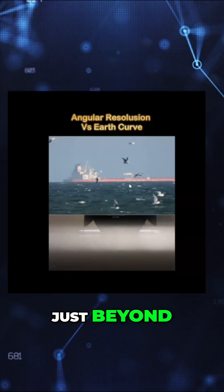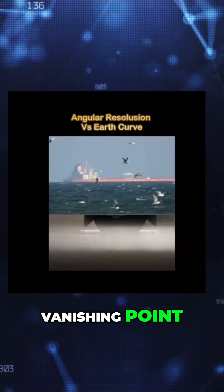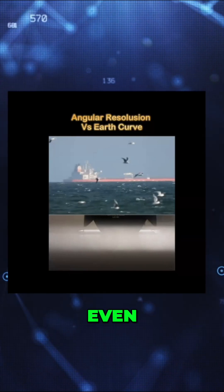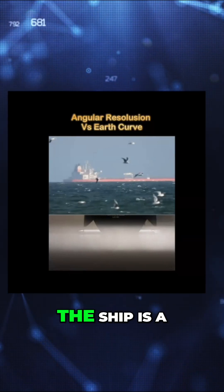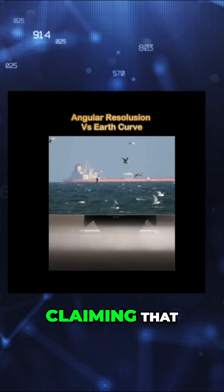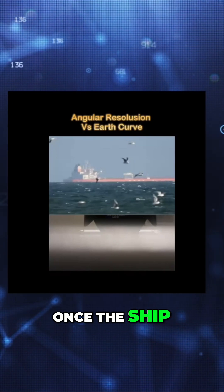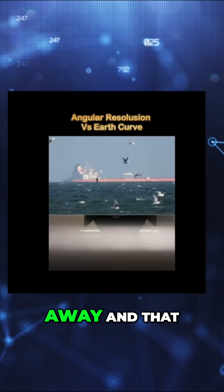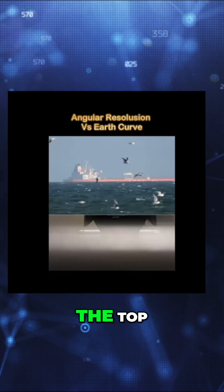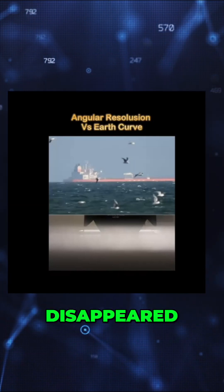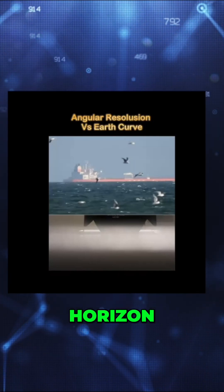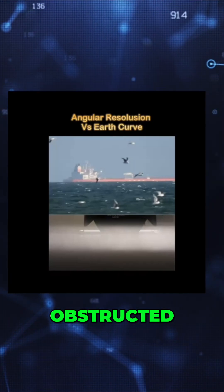But it's still just beyond the vanishing point. So the fact that we were able to even resolve the top of the ship is a problem for the globe, because they're claiming that once the ship has gone all the way away and disappeared bottom up to the point where the top has disappeared below the horizon, well then it's physically obstructed.